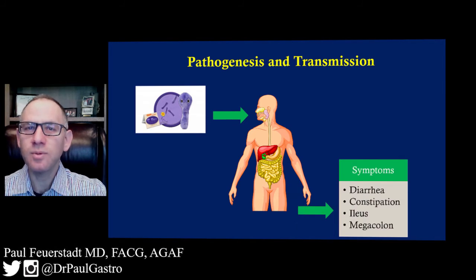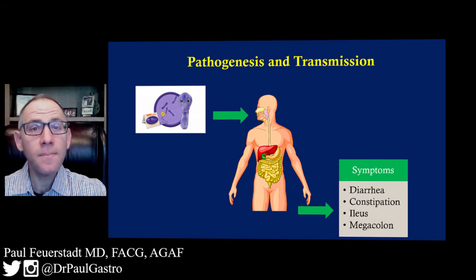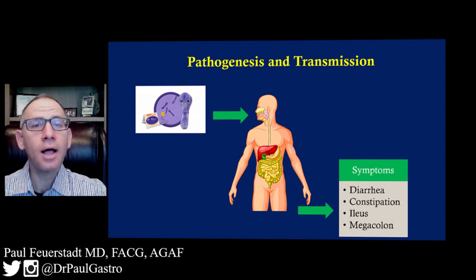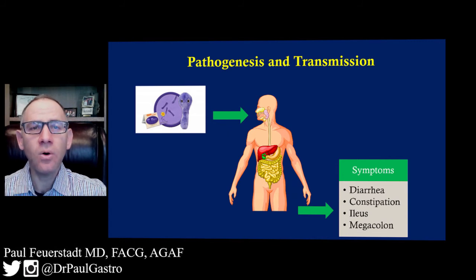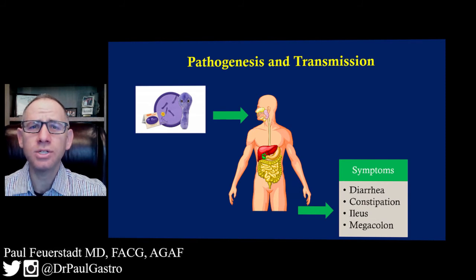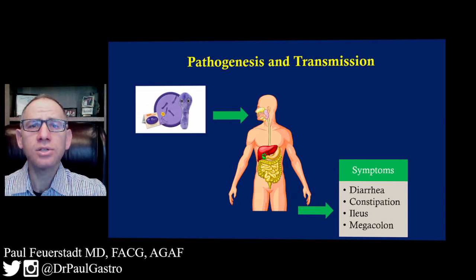What are the classic symptoms of C. difficile? The overwhelming majority of patients present with diarrhea. However, some patients can present with constipation, or something called an ileus, where the small bowel goes to sleep and no longer pushes bowel contents forward — typically resulting in bloating and abdominal discomfort. And finally, the worst complication that can potentially happen from C. difficile is something called a megacolon, where the large bowel slowly dilates and can actually perforate.